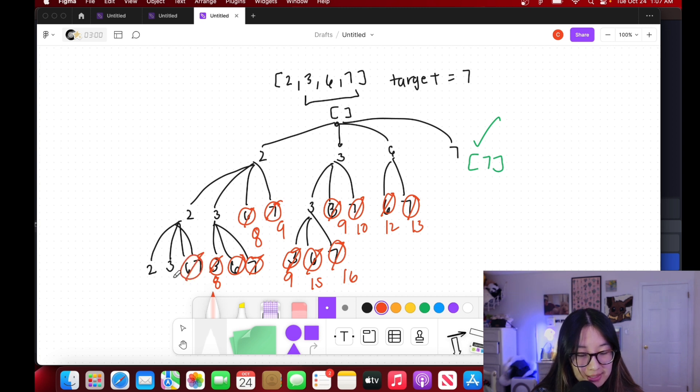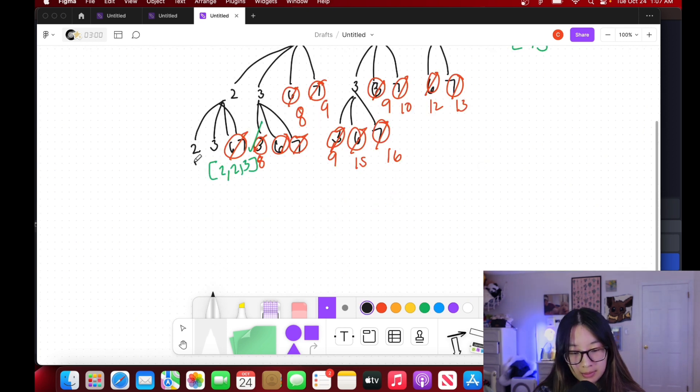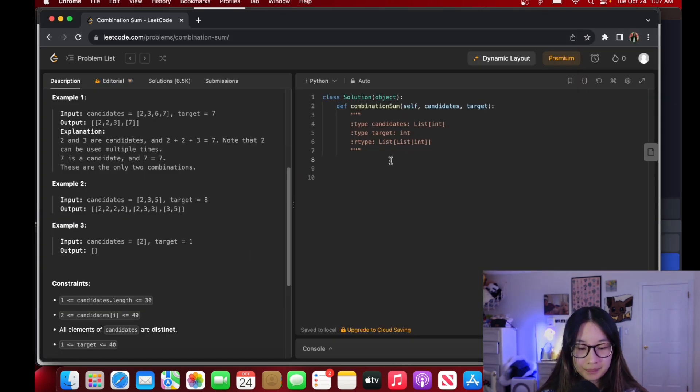We know 6 and 7 will be too much and 2, 2, 2 we can keep going. On this level we see that 2, 2, 3 is equal to 7, so we add that to our list. Now we keep going for 2 and we can go 2, 3, 6, 7, but we already know that all of these are out of range. We have a final list that we are going to return.